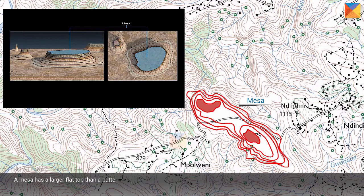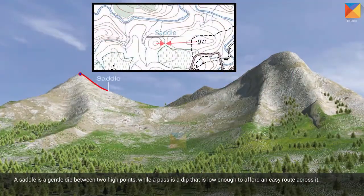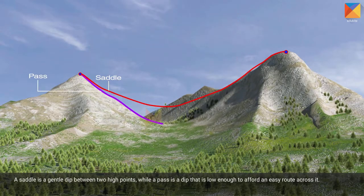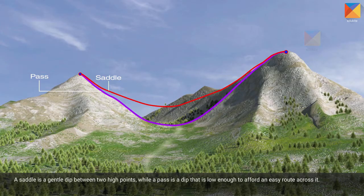A mesa has a larger flat top than a butte. A saddle is a gentle dip between two high points, while a pass is a dip that is low enough to afford an easy route through it.